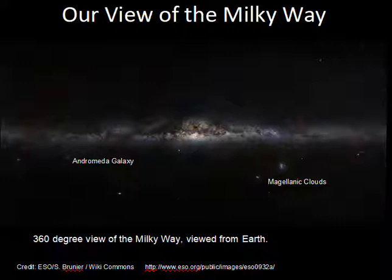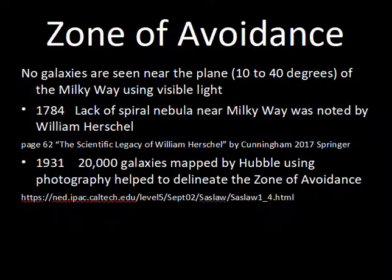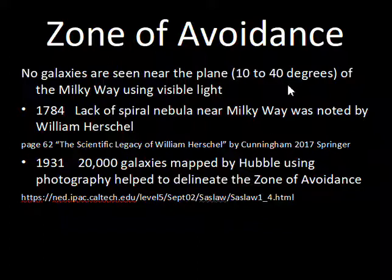The place where galaxies are not located on the sky came to be known as the zone of avoidance. Roughly in the direction of the center of the Milky Way galaxy, it's about a 40-degree-wide portion of the sky that does not have easily detectable galaxies. It's about 10 degrees wide when looking in the part of the sky opposite to the direction of the galactic center.